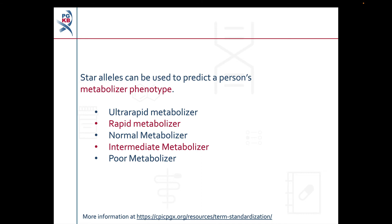These are the five metaboliser phenotype terms that are used in pharmacogenomics. Enzyme function decreases as you go down the list, so ultra-rapid metabolisers have the most activity while poor metabolisers have the least. Most CYP genes only use some of these groups rather than all of them. For example, an enzyme called CYP2C9 only has normal, intermediate, and poor metaboliser groups.